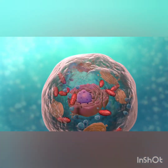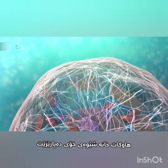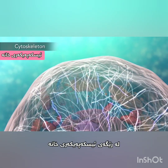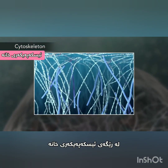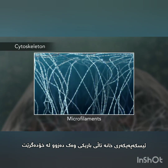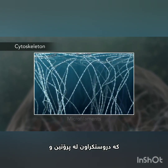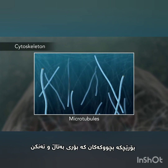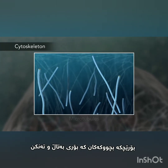Meanwhile, the cell maintains its shape through a cytoskeleton. The cytoskeleton includes the thread-like microfilaments, which are made of protein, and microtubules, which are thin hollow tubes.